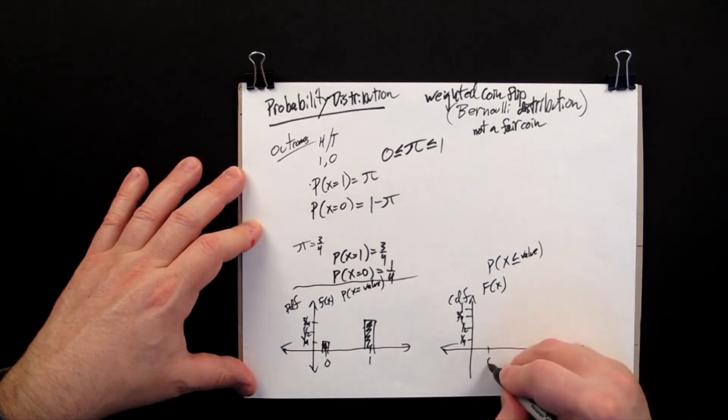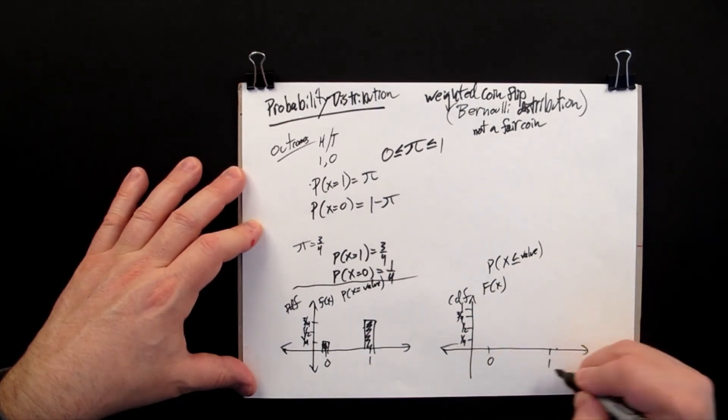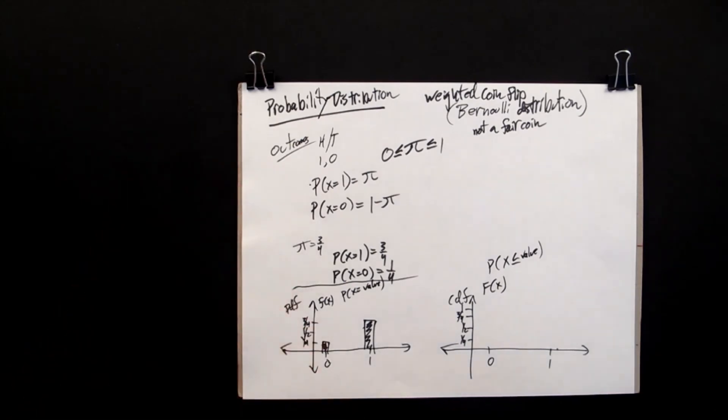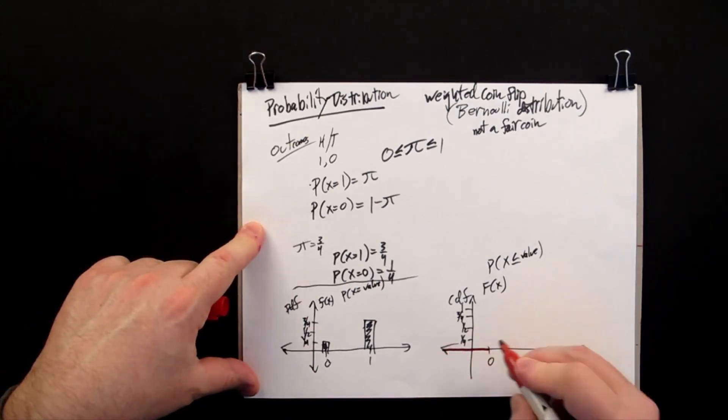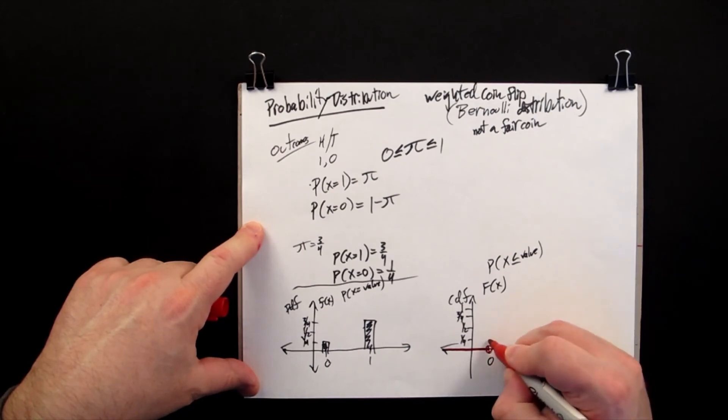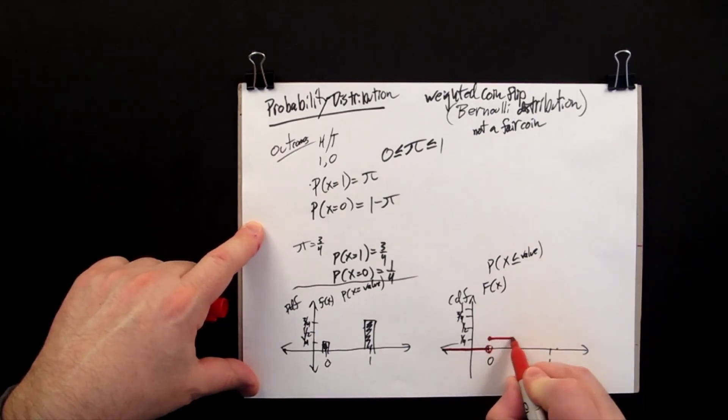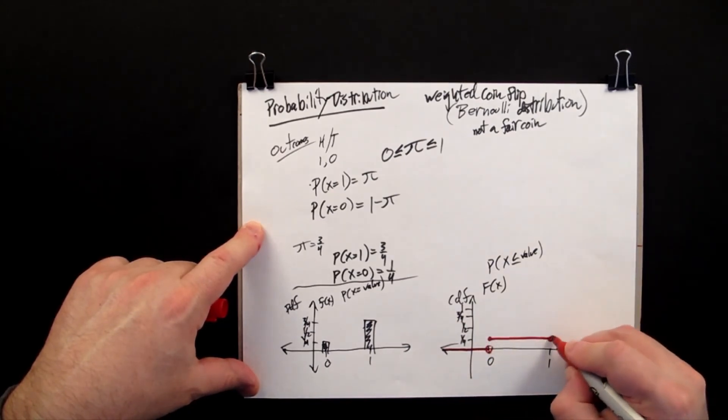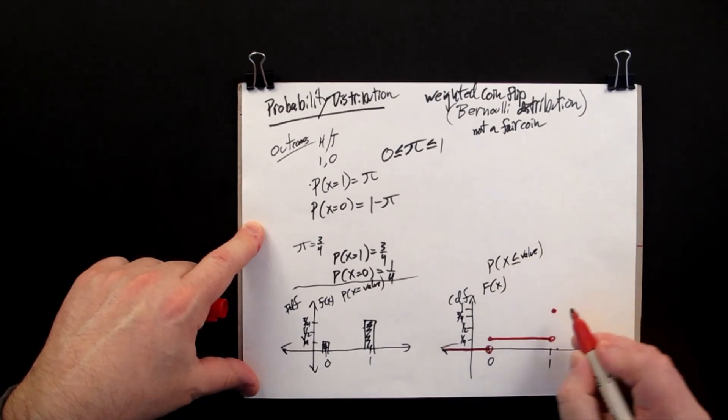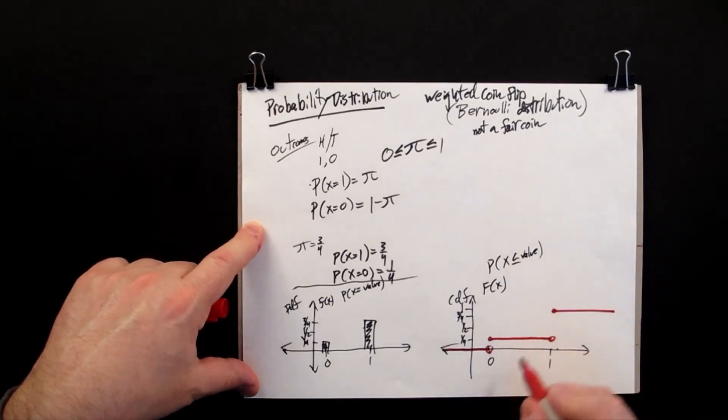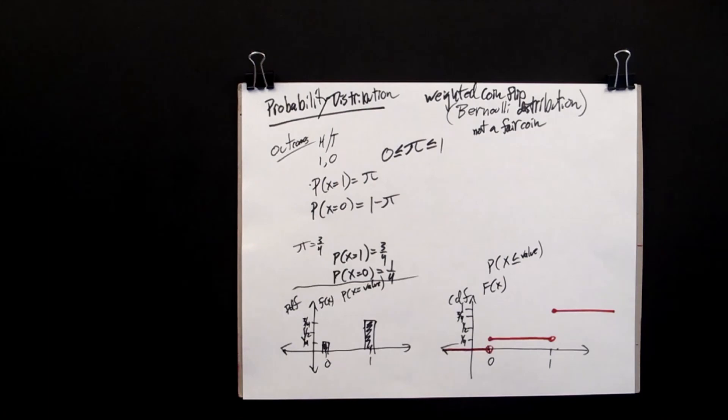So this time, what's going to happen is that it comes along at 0 until you get to 0, and then it jumps up to a quarter, continues on until you get to 1, and this time it jumps up to 1. So you can see that there's a difference in terms of the relative height here.